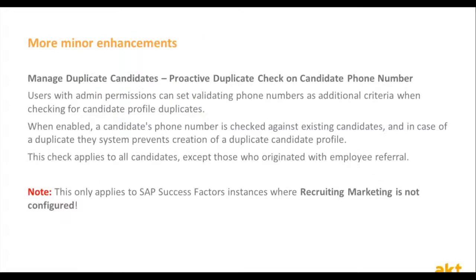The next topic is again for candidate duplication. From this release on, you can perform a proactive duplicate search based on the candidate's phone number. A lot of candidates appear with different emails, so basing duplication detection on emails caused many duplicate candidates to still exist in the system. Using the phone number makes this search much more focused and will reveal a lot of duplicates that were previously hidden. One quick note: if you are using recruiting marketing, this feature will not be available for you.